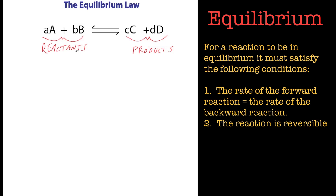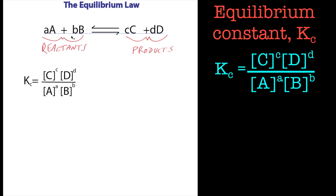Kc is defined by the equilibrium equation. Kc is the equilibrium constant for this reaction. It defines the extent to which the equilibrium lies — whether it's on the left-hand side or the right-hand side. These Kc values are calculated and documented for a whole range of reactions, but there's nothing stopping people from creating new ones for new reactions.